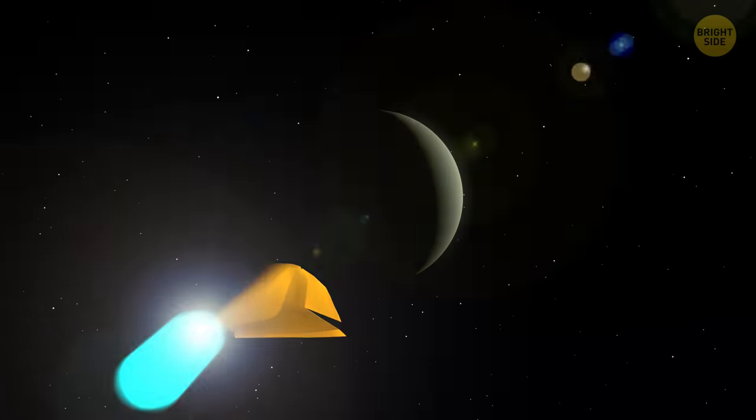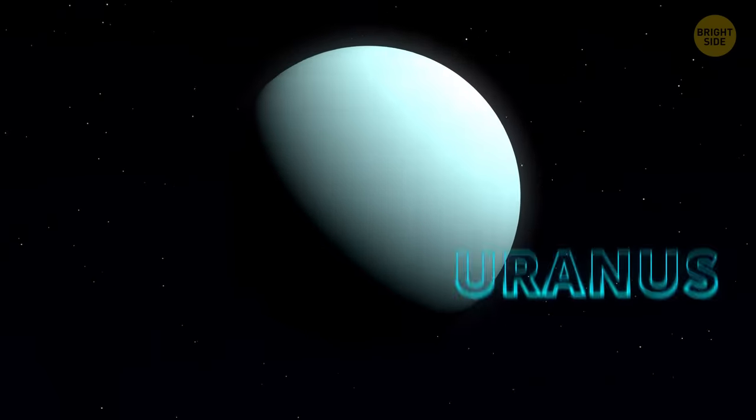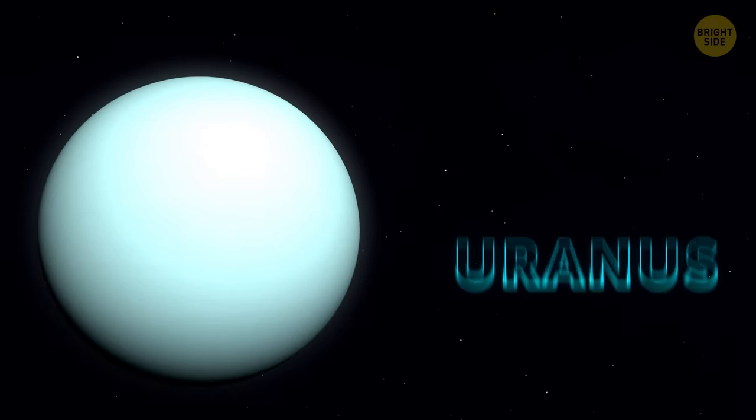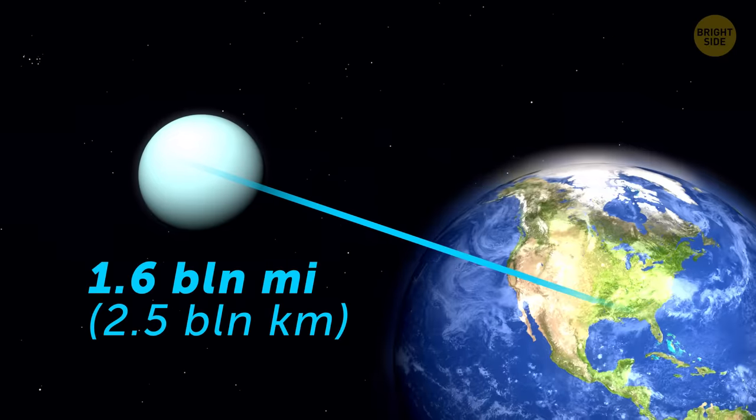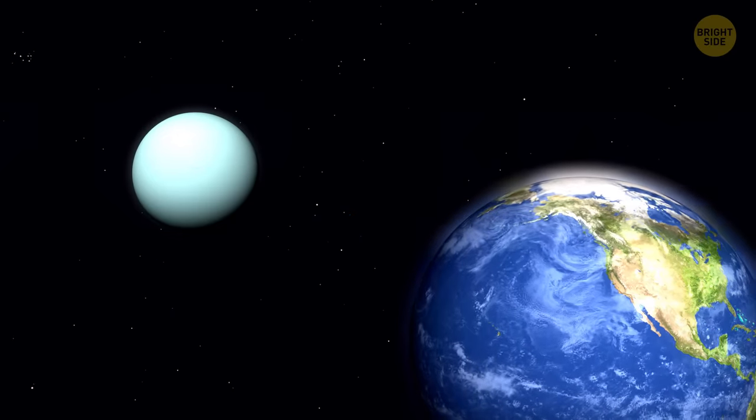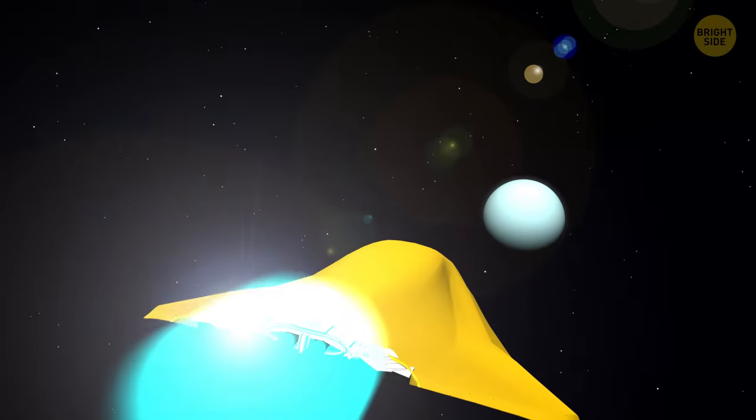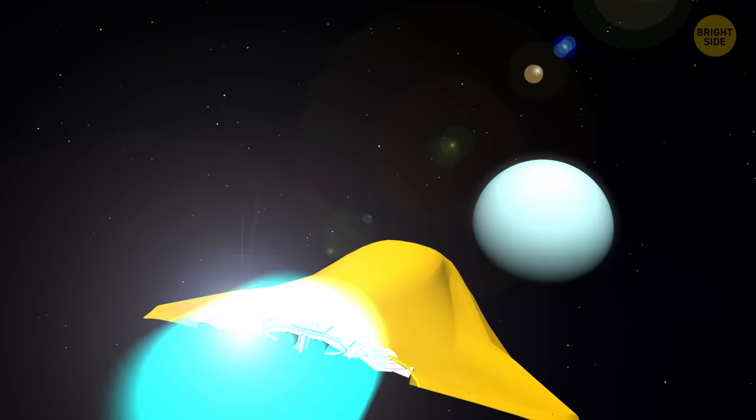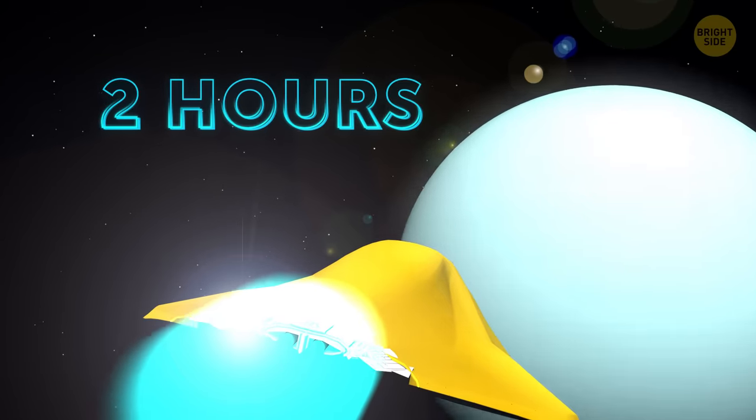And now, let's use that speed of light to the fullest and go to Uranus. Get your spaceship thoroughly checked, because you'll have to travel 1.6 billion miles. That's the closest Uranus has ever been to Earth. Thanks to your lightning-fast speed, the trip wouldn't take too much time, just a bit more than 2 hours.